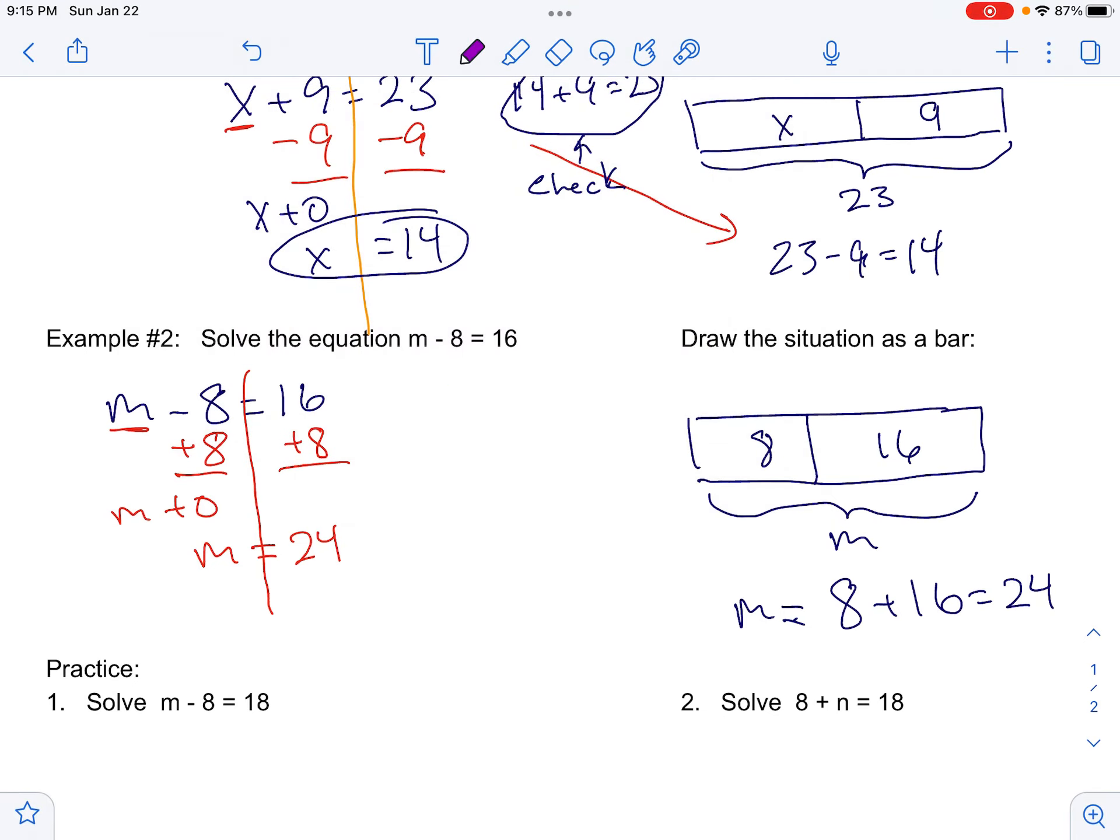As we did before with the previous problem, I should be able to come over here and check. On the check, I put 24 for m, so I go 24 minus 8, and yeah, that works out to be 16. So this is our correct answer. There's a couple practice problems that go with this worksheet, so complete those and show them to Mr. Wilbert when you get a chance.